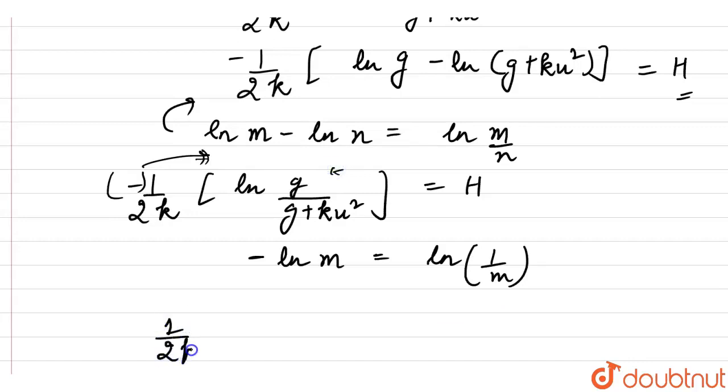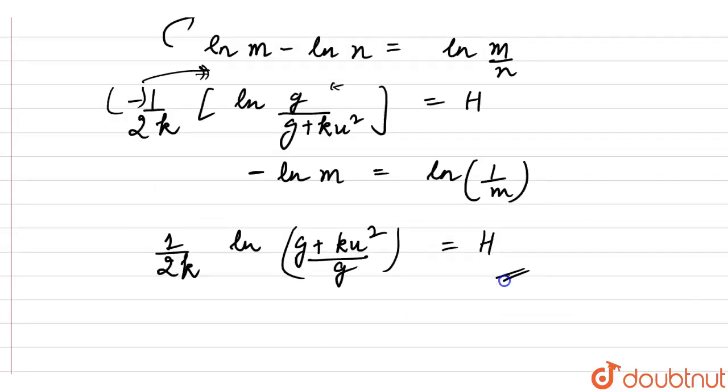This equals capital H. This is our maximum height. We can simplify it. 1 upon 2k ln g plus k u squared divided by g. This is our final answer.